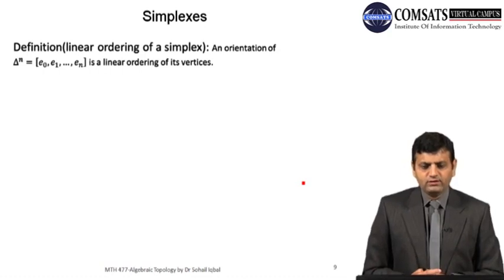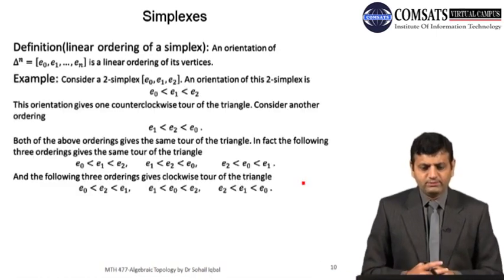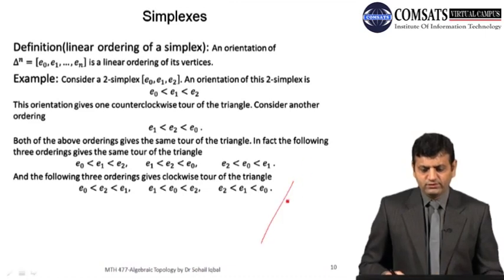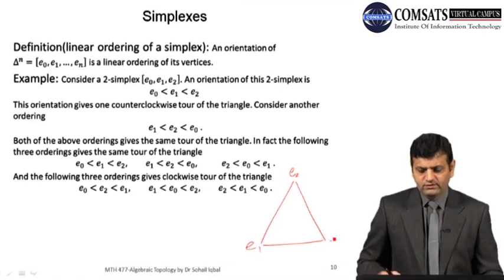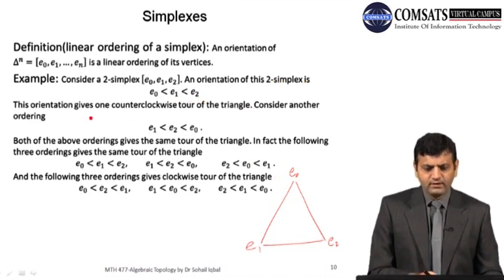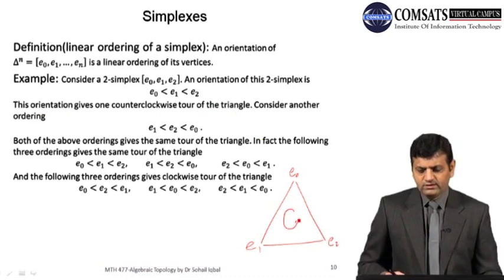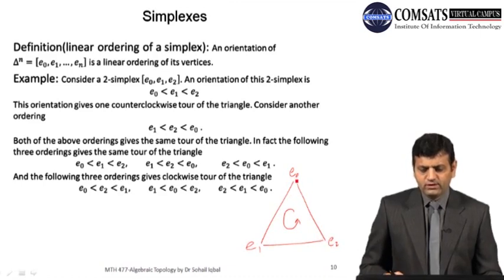An orientation of an n-simplex is a linear ordering of its vertices. For example, consider the two simplex e_0, e_1, e_2. An orientation is e_0 < e_1 < e_2. This orientation gives one counter-clockwise tour of the triangle — starting from e_0, going to e_1, then e_2, then back to e_0, completing one tour.